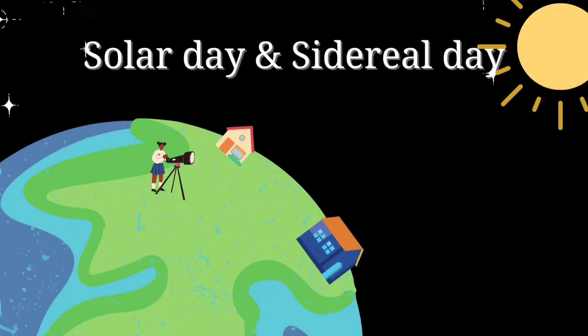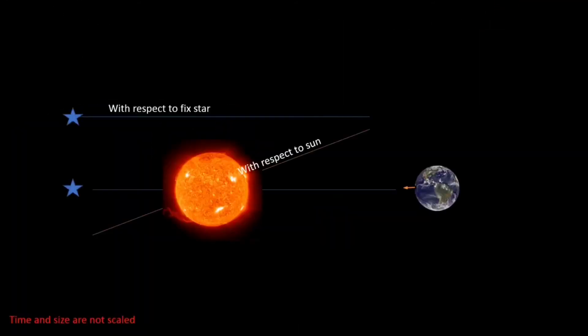Earth has two types of day: solar day and sidereal day. This happens just because of Earth's rotation and revolution.